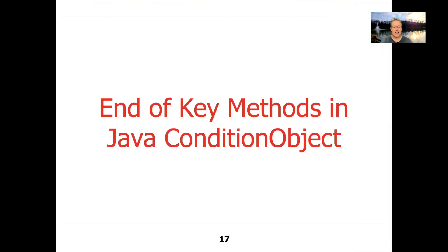So that's the end of the overview of the key methods in the Java ConditionObject class. We'll come back and talk about other dimensions here in just a moment.